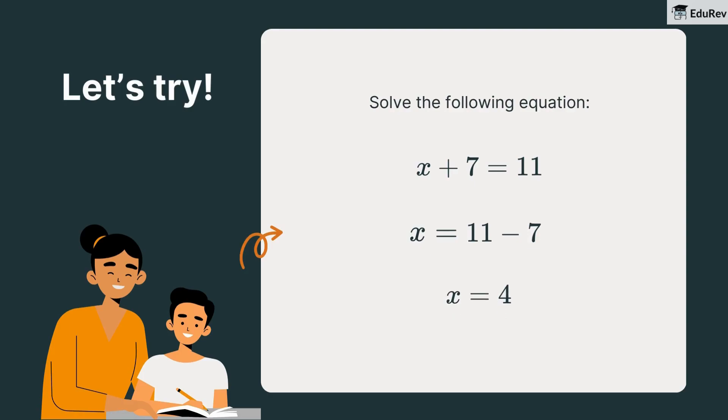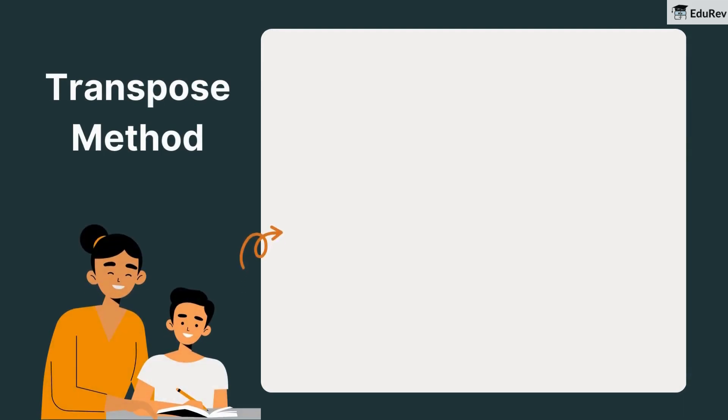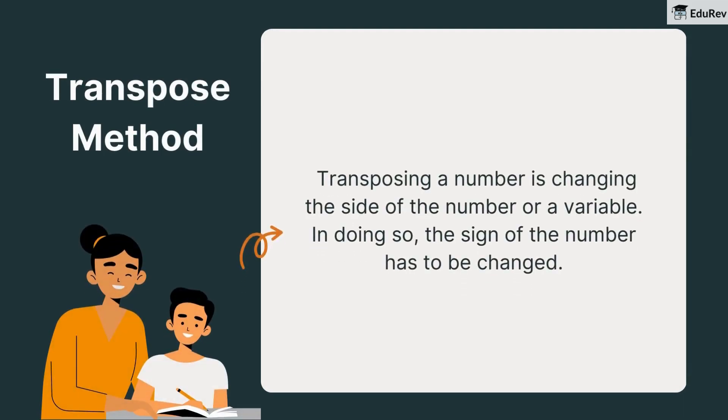In this question, we used a method called transposing method. Transposing a number is changing the side of the number or a variable. In doing so, the sign of the number has to be changed.